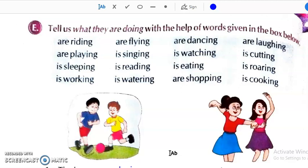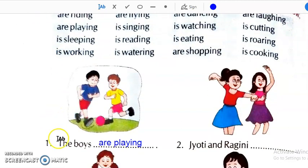Here are some pictures given and we have to write the sentence below the picture. We have to select the doing words from all these words. This is help box and we have to write proper doing word below the picture. Here the first one, the boys are playing football.